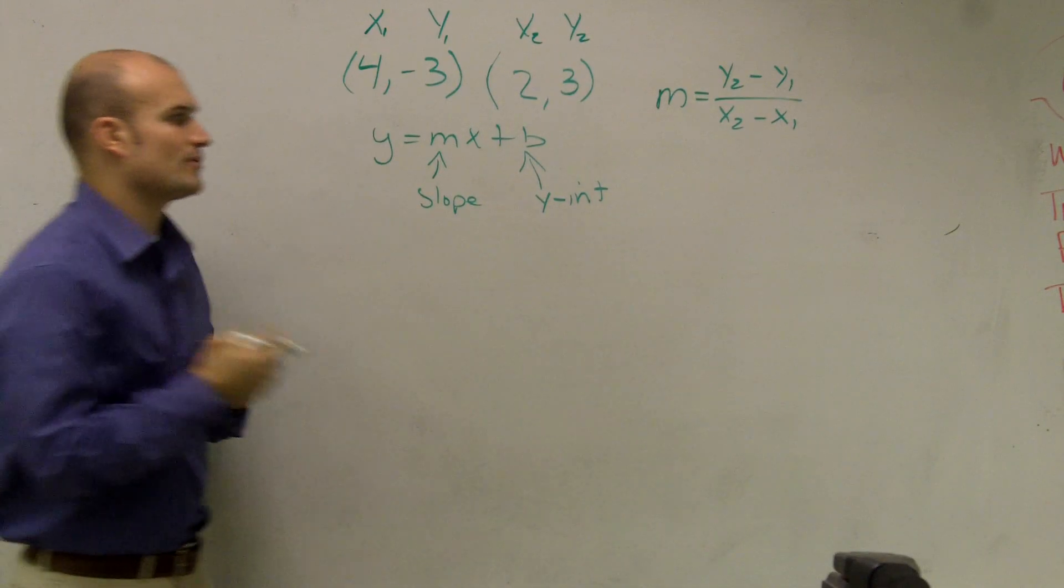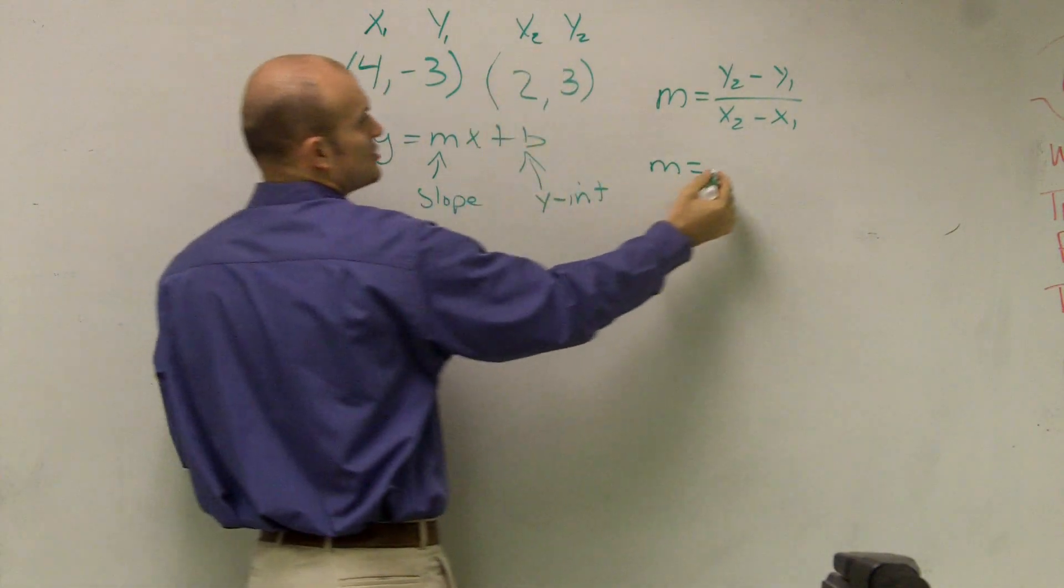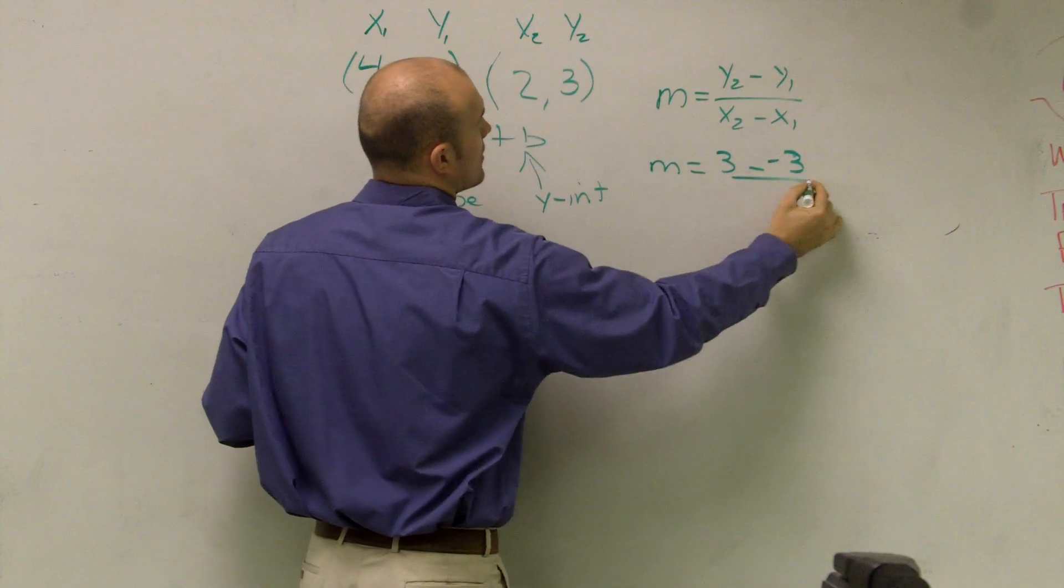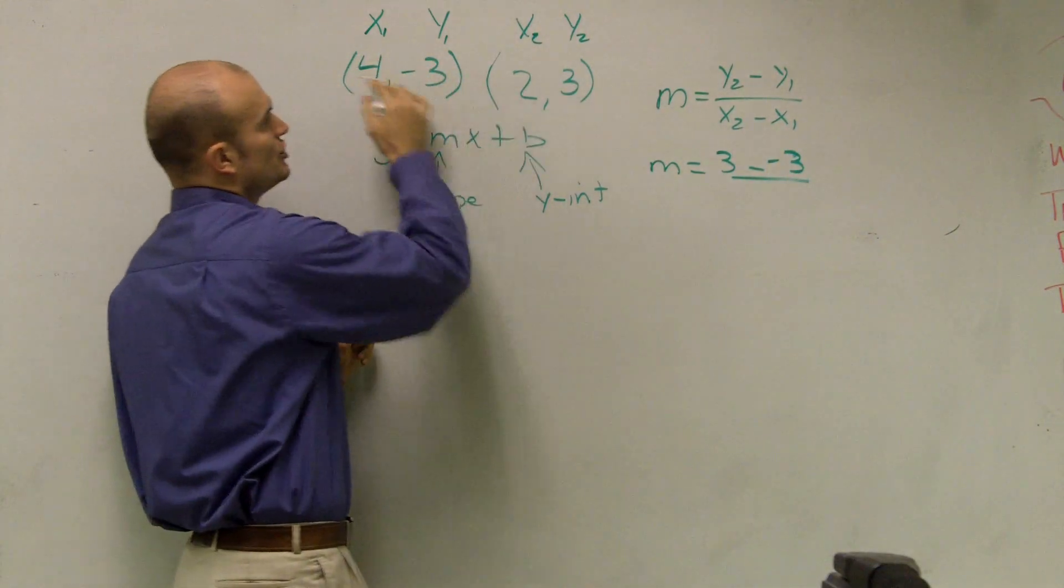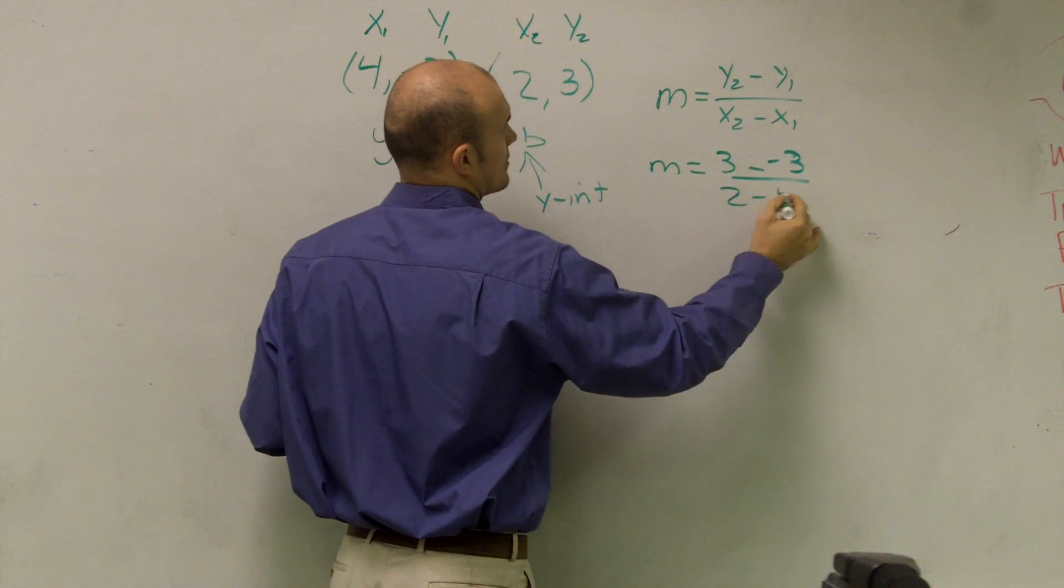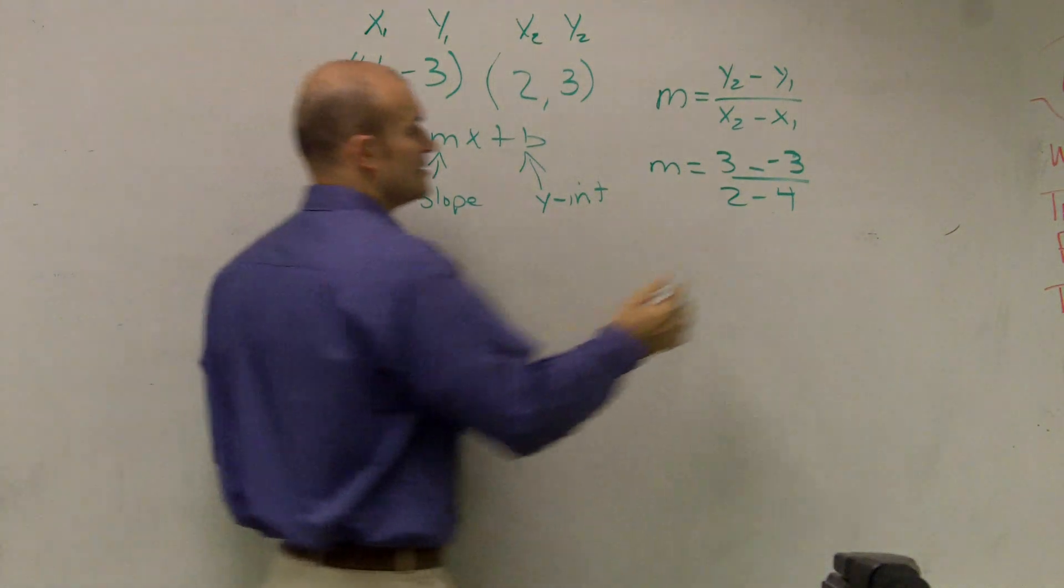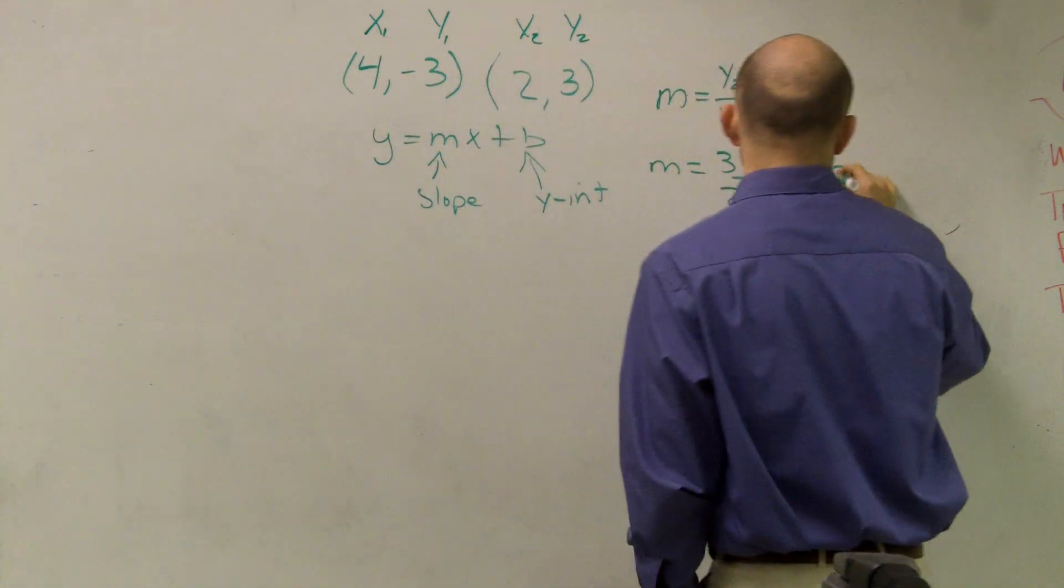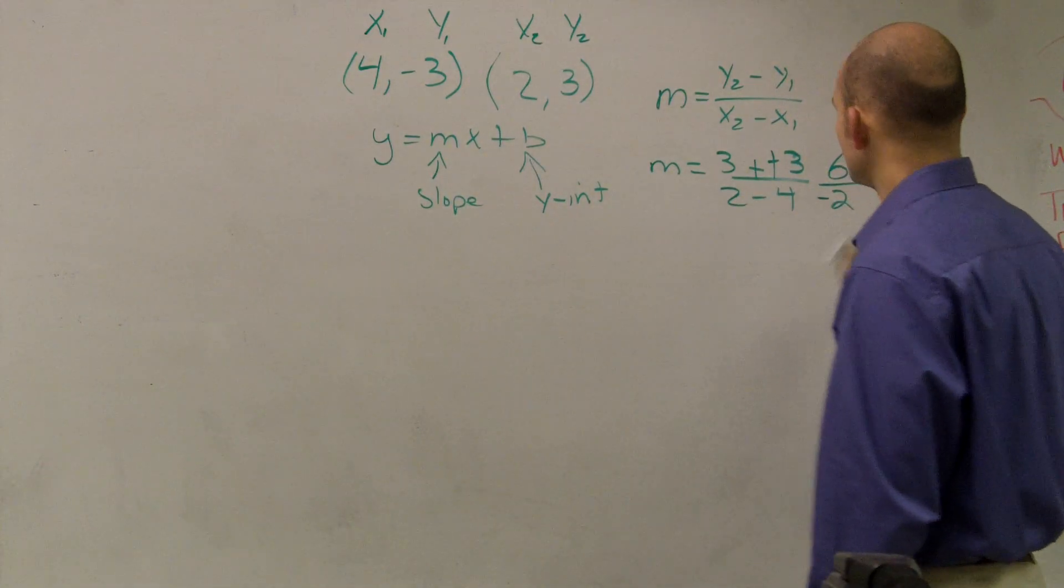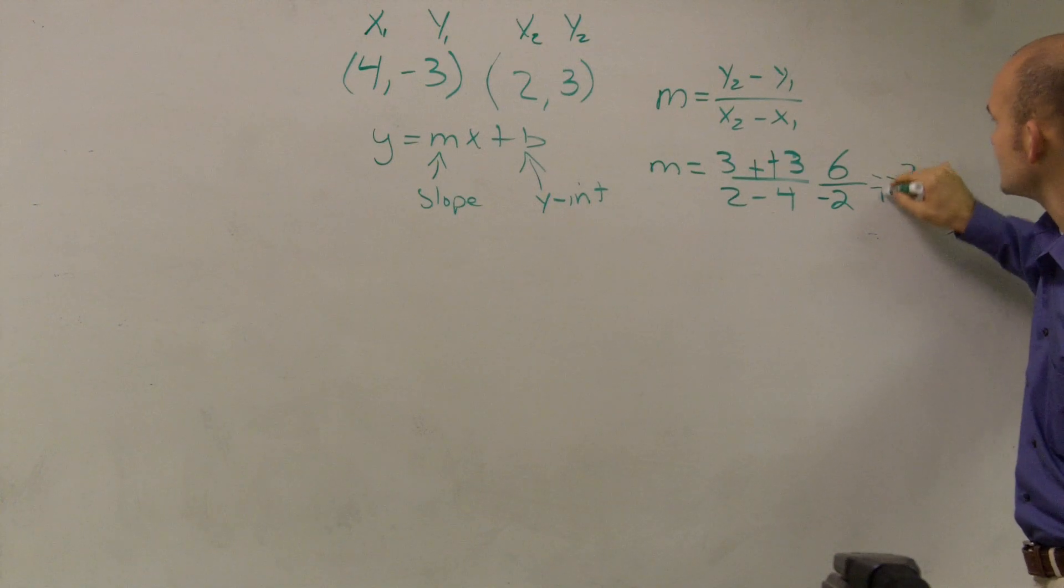Now I'll plug them in to find m. So y2 is 3 minus negative 3 all over x2, which is 2, minus x1, which is 4. That's 3 minus negative 3 equals 6, over 2 minus 4 equals negative 2. Six divided by negative 2 is negative 3.